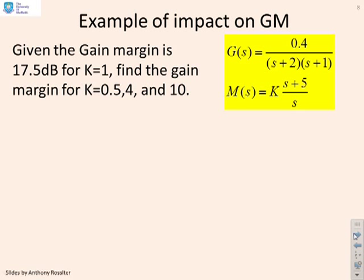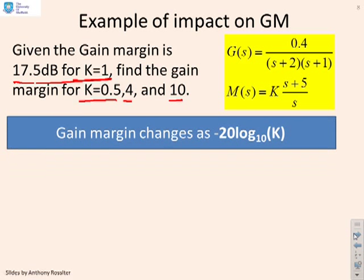So here's an example of using that. Given the gain margin is 17.5 decibels when K equals 1, find the gain margin for K equals 0.5, 4, and 10. And what we're going to do is simply use the formula we've derived on the previous page. So what we've said is the gain margin changes as minus 20 log to the base 10 of K.